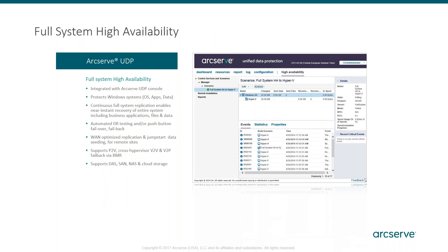We also offer continuous protection of systems. If you had a system that was just critical, and maybe there's too much change rate to back it up every 15 minutes, you can leverage full system high availability — where we continuously replicate block-level, machine-level changes to a standby VM ready to come up in place of that other machine in case of a failover. We do offer failover and failback with this. We would re-image the source and get you back up and running. You can point this to a virtual environment you have or up to Amazon as another location.